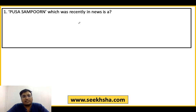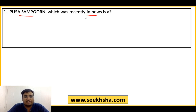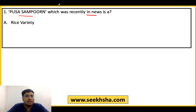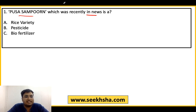Let's see the first question: Pusa Sampurn was recently in the news — what is this? Option A, Option B, Option C: Biofertilizer, Option D, Option E: None of the above.